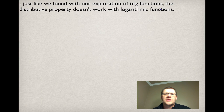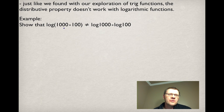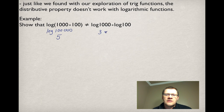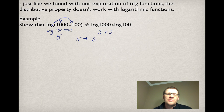Just like we found with our exploration of trig functions, the distributive property doesn't work with logarithmic functions. To show this, log of 1,000 times 100 is not the same as log 1,000 times log 100. Log(1,000 × 100) is just log(100,000). Since there's no base written, the base is 10 — so we ask what exponent gives 10 to get 100,000, and that's 5. Meanwhile, log 1,000 is 3 and log 100 is 2, giving 3 × 2 = 6. Since 5 ≠ 6, the logarithmic function is not distributive.